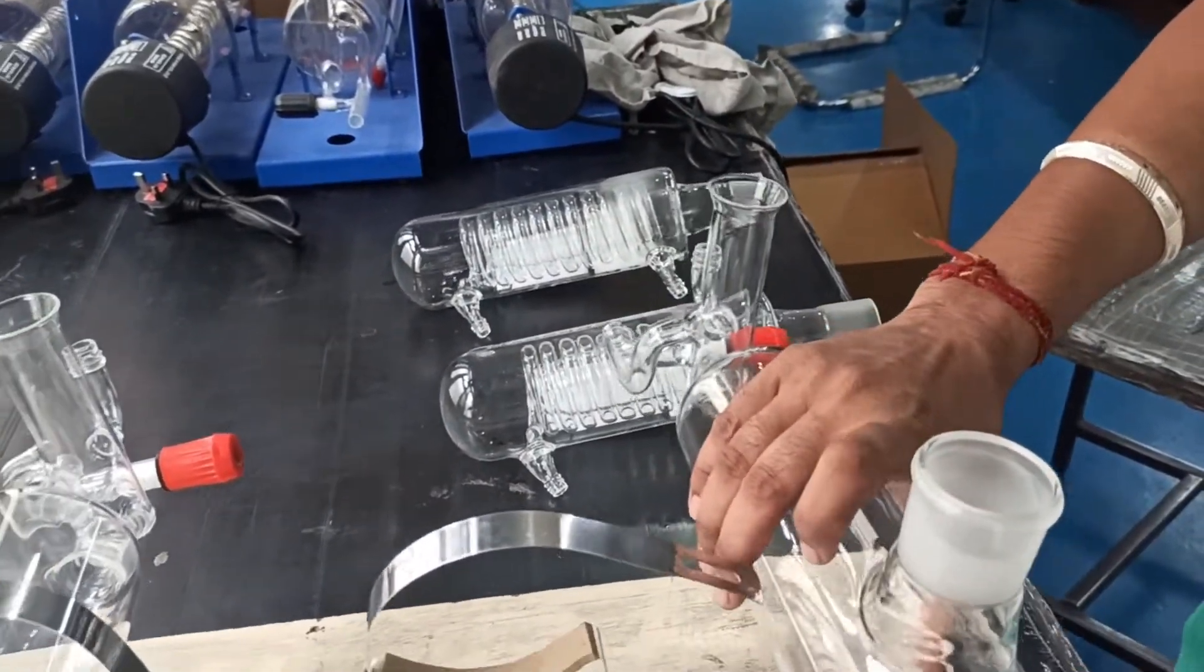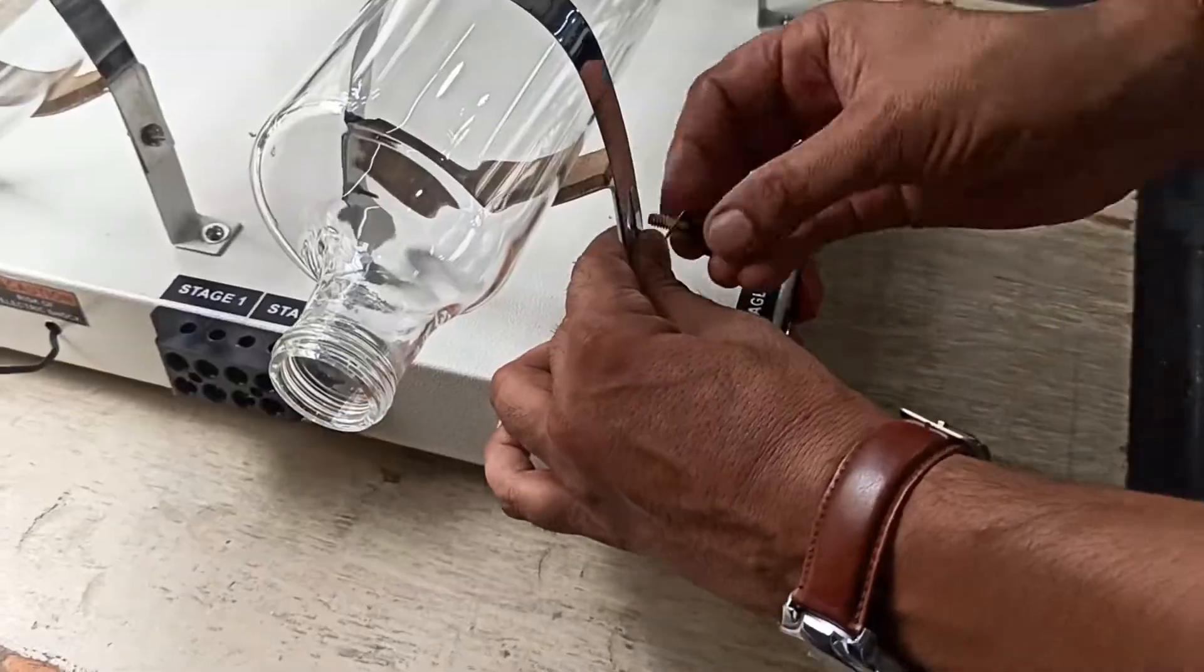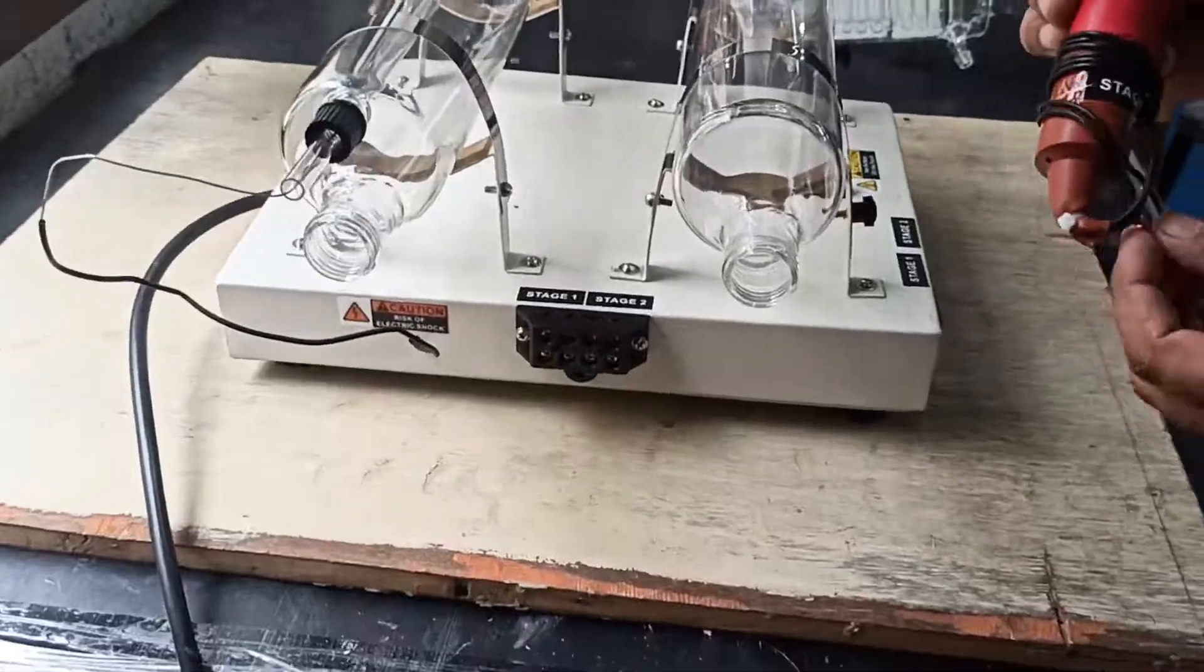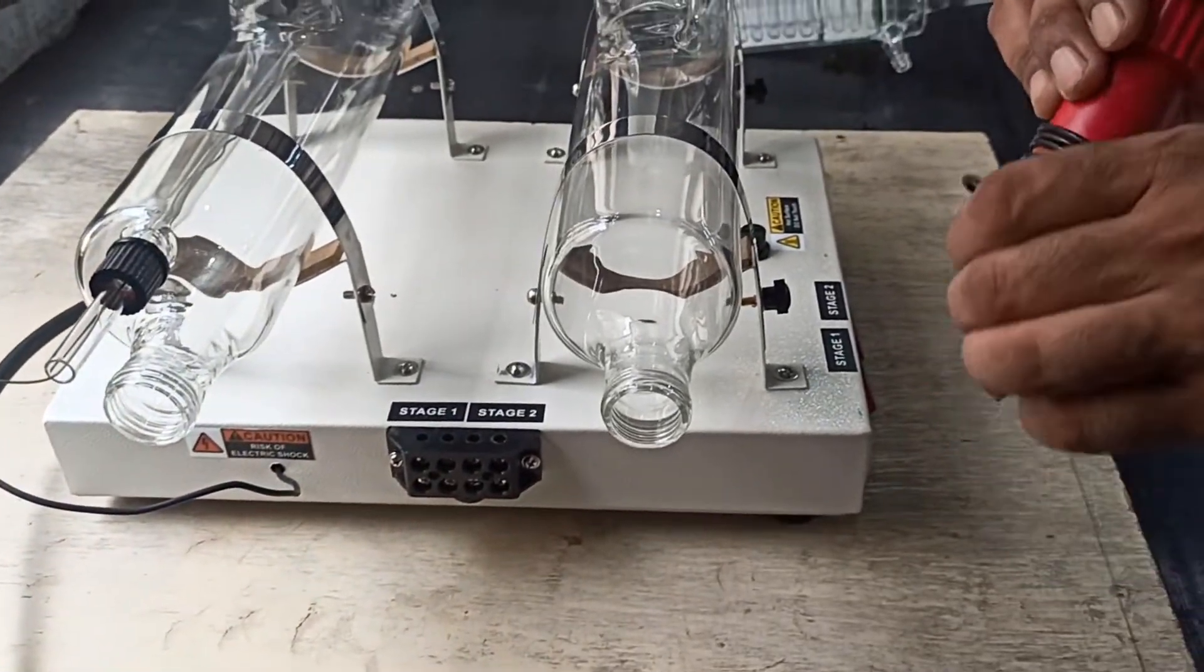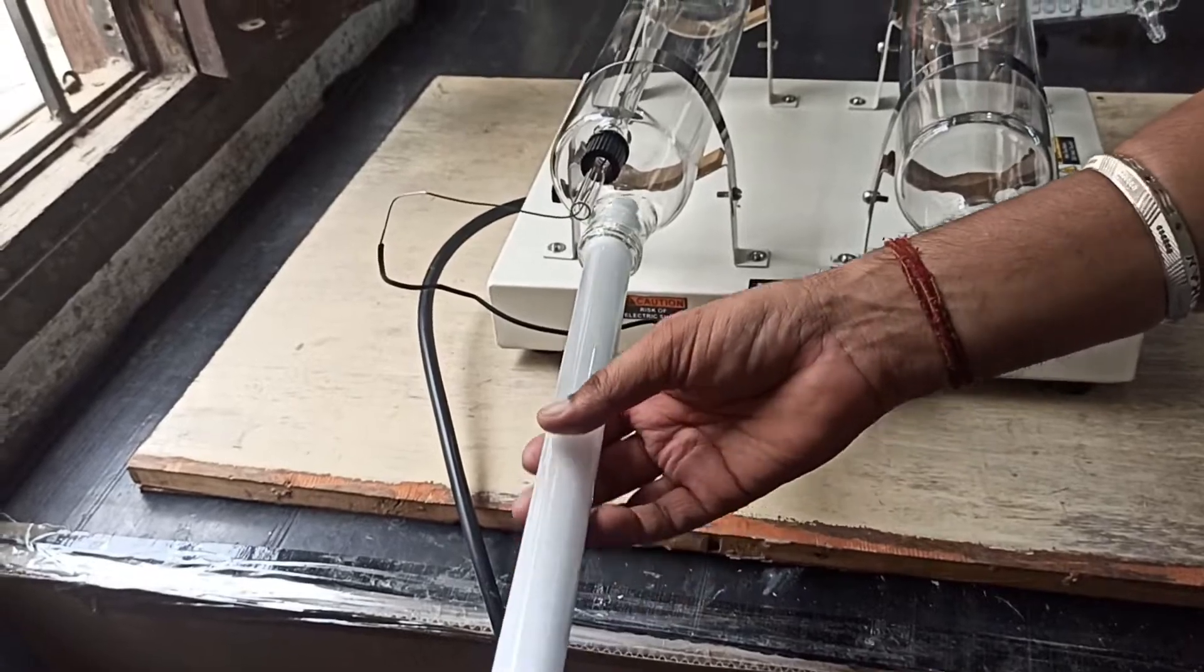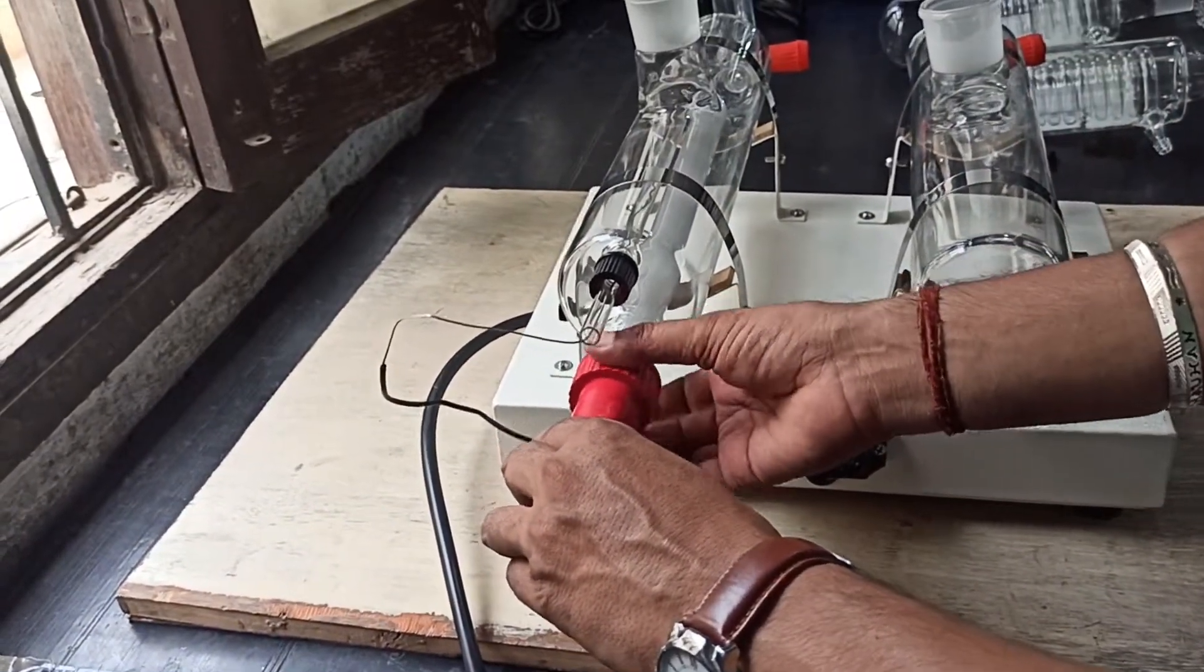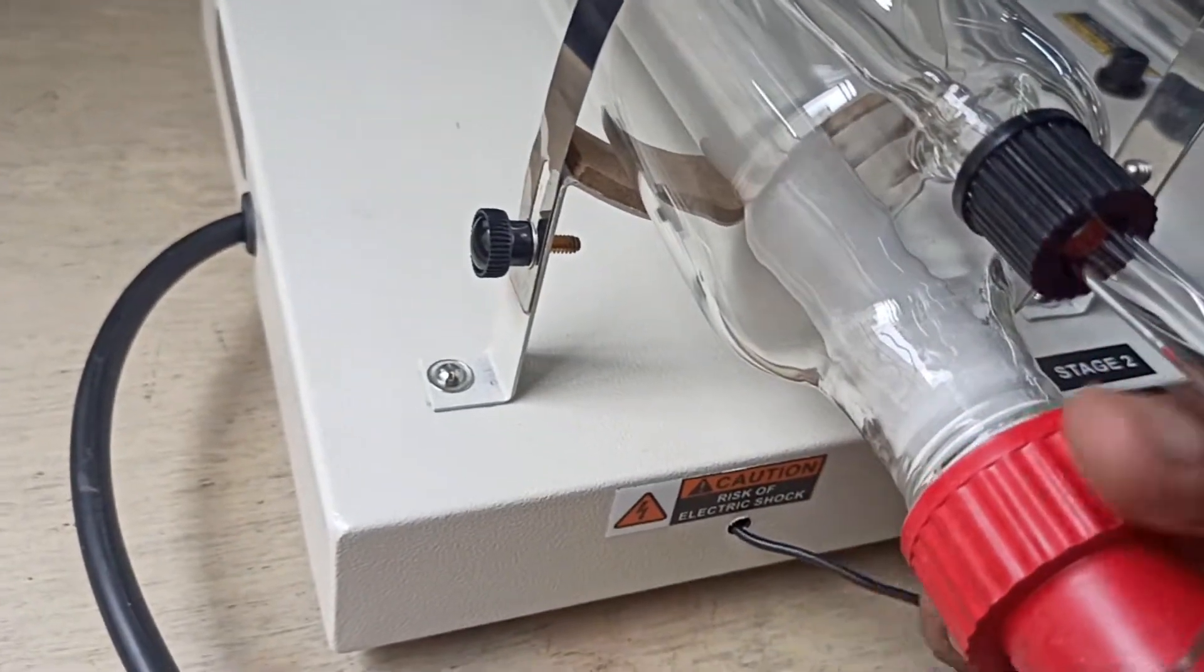Place the second stage boiler. Insert the first stage heater. There are two different heaters available for the first and second stages, so be very careful while placing the heater. Place the right heater for both stages. The heater should be placed deeply into the boiler.